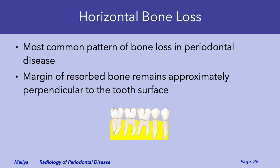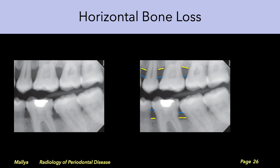The most common pattern of bone loss is horizontal bone loss, where the margin of resorbed bone remains perpendicular to the surface of the tooth. This radiograph demonstrates a horizontal bone loss pattern. Note that the level of bone, shown in yellow, continues to remain parallel to a line joining the CEJs of the adjacent teeth, shown in blue.